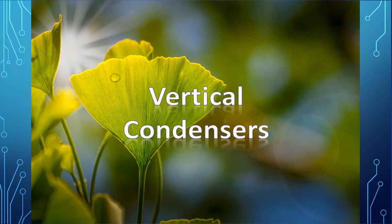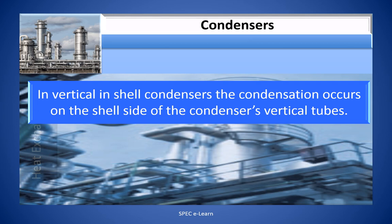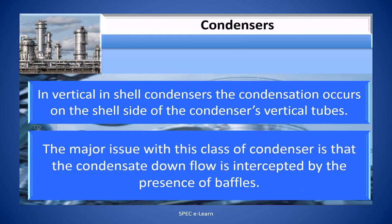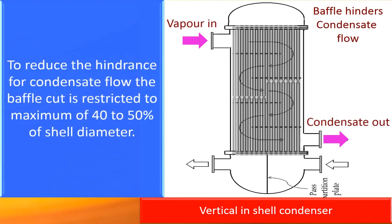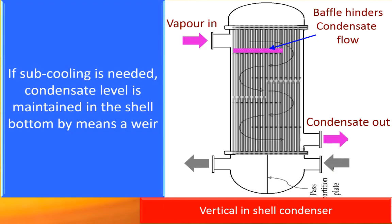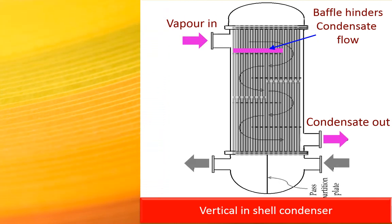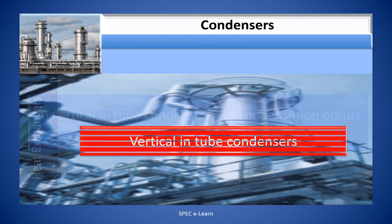In vertical in-shell condensers, the condensation occurs on the shell side of the condenser's vertical tubes. The major issue is that condensate downflow is intercepted by the presence of baffles. To reduce hindrance for condensate flow, the baffle cut is restricted to a maximum of 40–50% of the shell diameter. If sub-cooling is needed, the condensate level is maintained in the shell bottom by means of a weir.